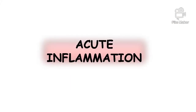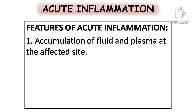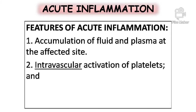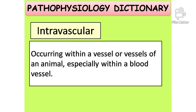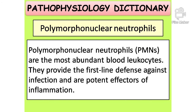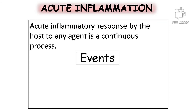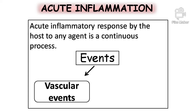Acute inflammation is of short duration and lasts less than two weeks. It represents the early body reaction, resolves quickly, and is usually followed by healing. Features of acute inflammation include accumulation of fluid and plasma at the affected site, intravascular activation of platelets — intravascular meaning which occurs within a vessel, especially within a blood vessel — and polymorphonuclear neutrophils as inflammatory cells. Polymorphonuclear neutrophils are the most abundant blood leukocytes and provide the first-line defense against infection, acting as potent effectors of inflammation. The acute inflammatory response by the host is a continuous process occurring in two events: vascular events and cellular events.